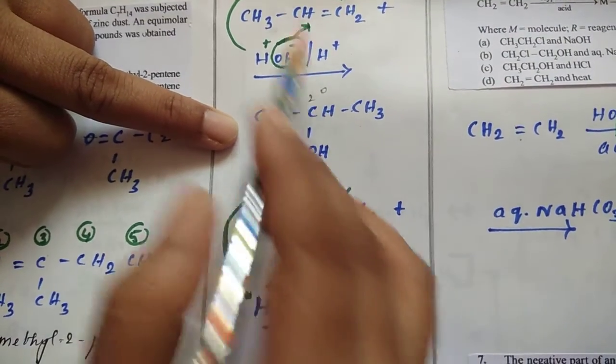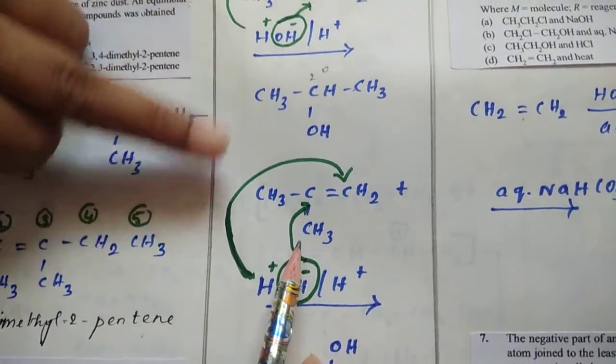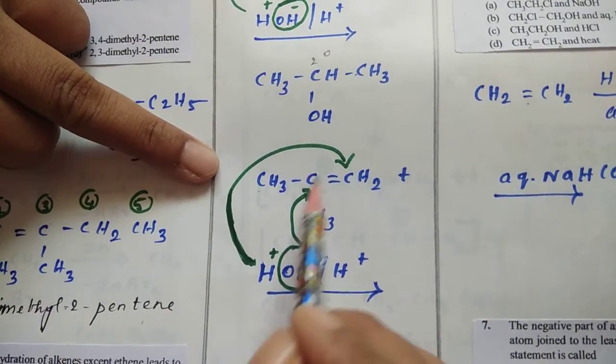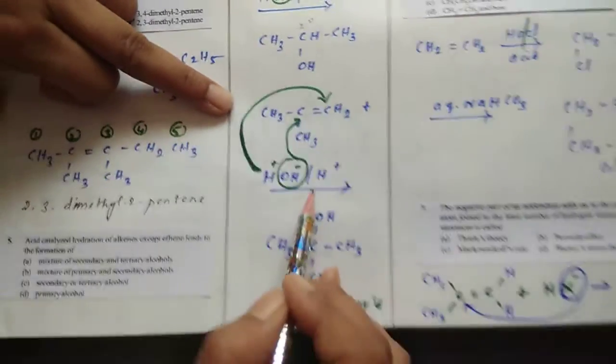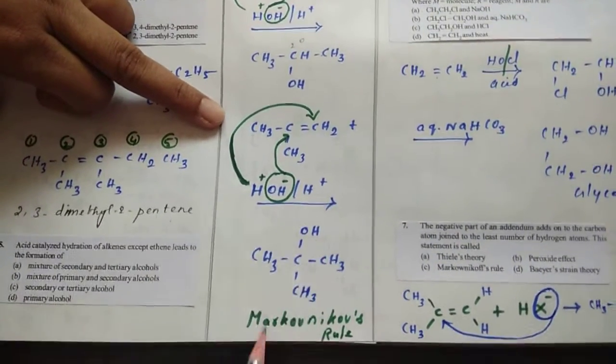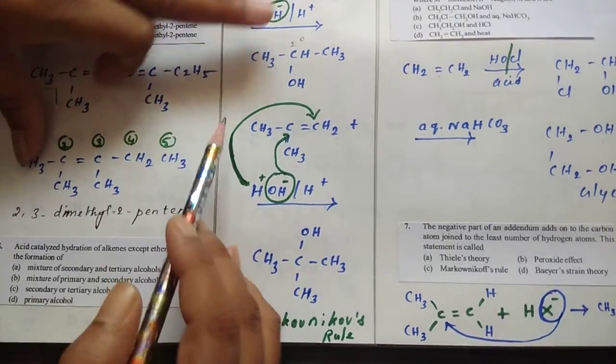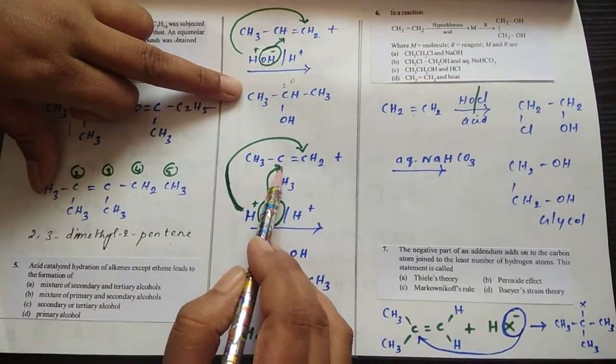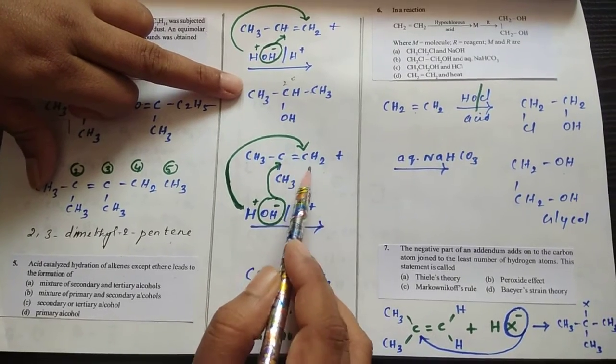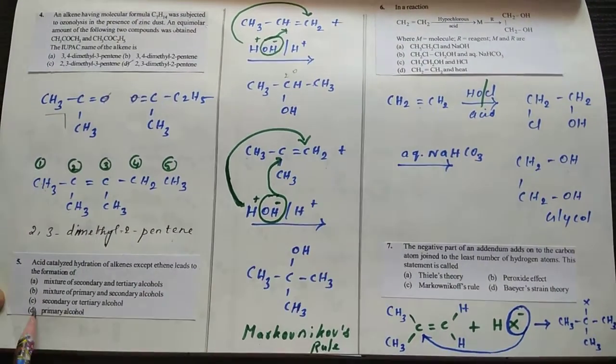If instead of this CH, if you have one more methyl group, CH3-CCH3, 2-methylpropene, if you are taking that, it will undergo acid hydrolysis and we get tertiary alcohol. The additions, both additions, are based on Markovnikov's rule. The negative group is attached to the carbon which contains the least number of hydrogens. So your answer is option C.